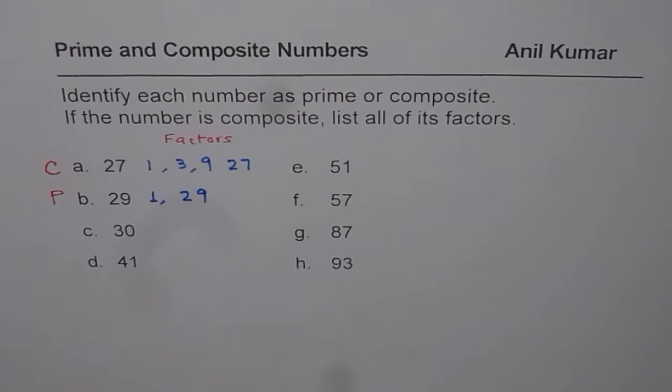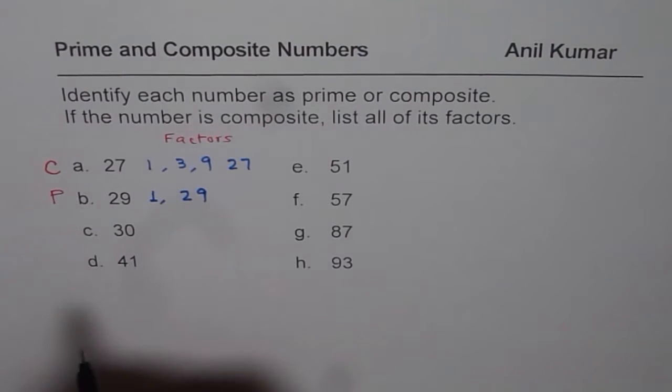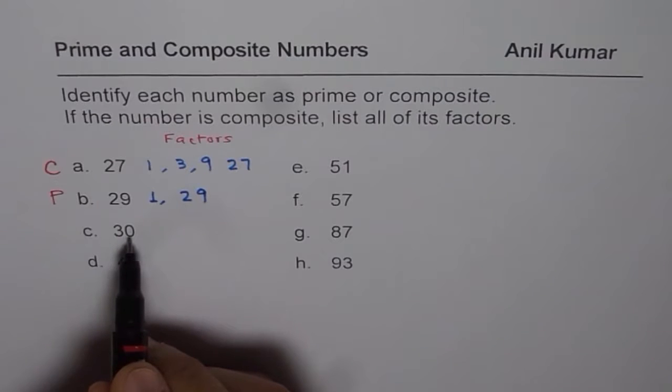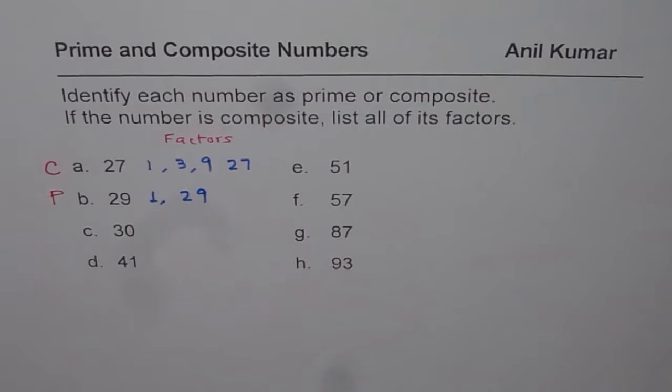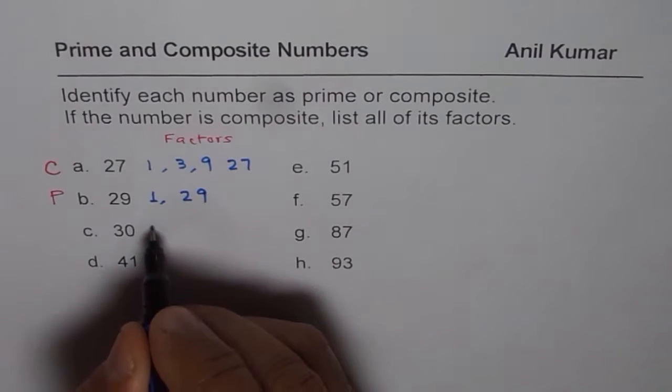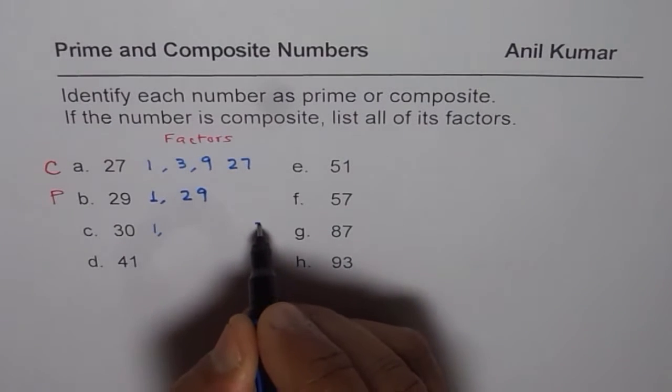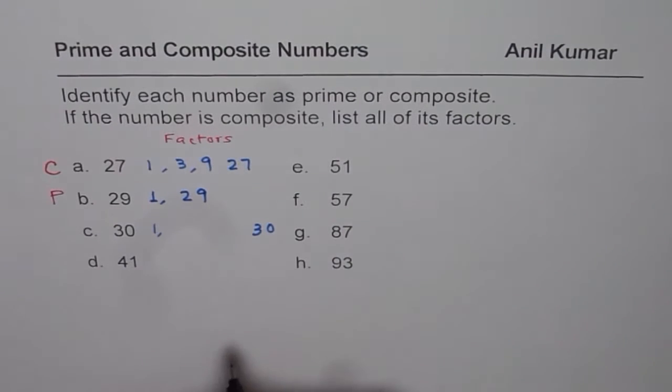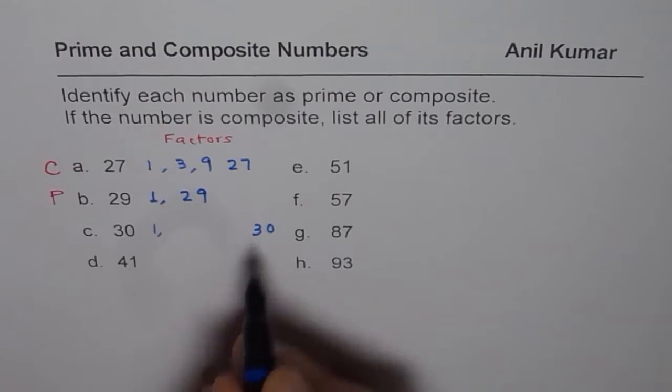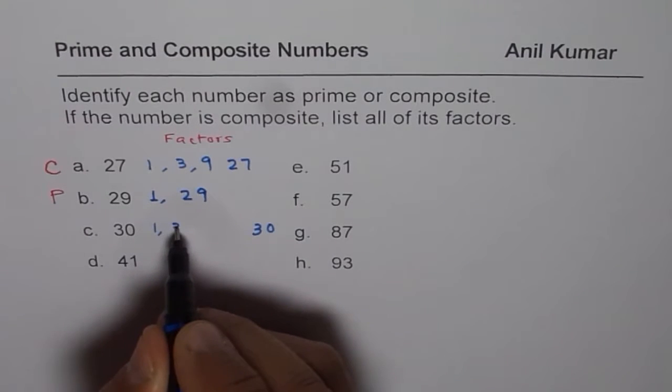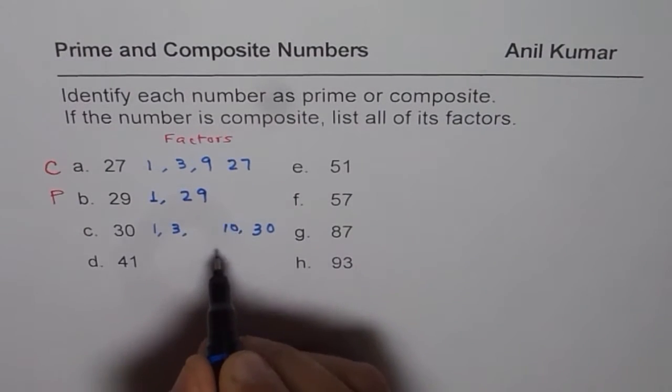So likewise, we can continue. Now we have 30. Now 30 is ending with 0. That means it could be divided by 10. So of course, it has 2 factors, which are 1 and 30. 1 and number itself. These are factors of every number. In addition to that, it has 3 times 10.